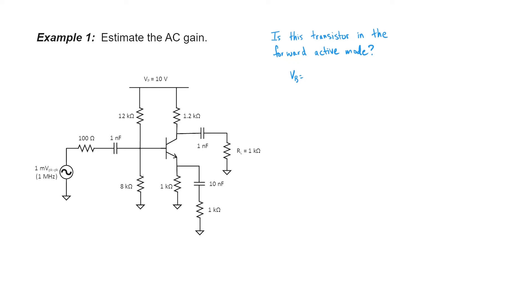My base voltage is some fraction of 10 volts given by the voltage divider set up by these two resistors. It works out to 4 volts. My emitter voltage ought to be about 0.7 volts below it — 3.3 volts. For DC, all of the current goes through the left resistor; everything's blocked from the right by that 10 nanofarad capacitor. Therefore, my DC emitter current is just 3.3 divided by 1 kilohm, or 3.3 milliamps.